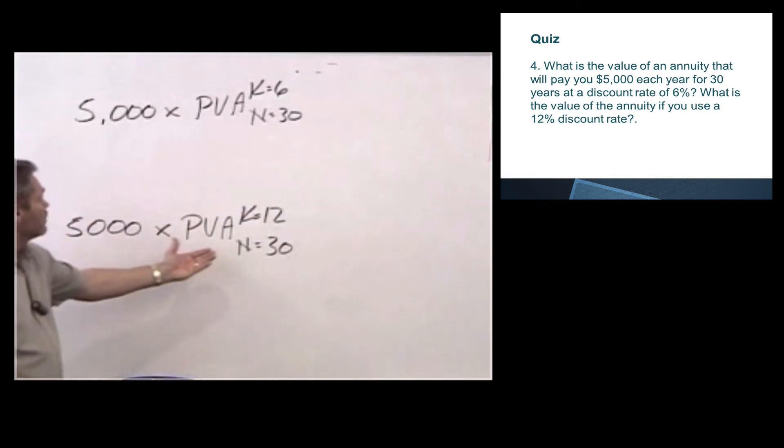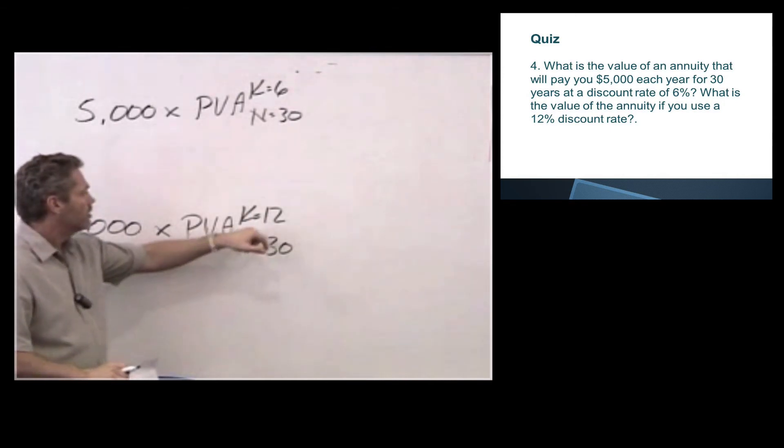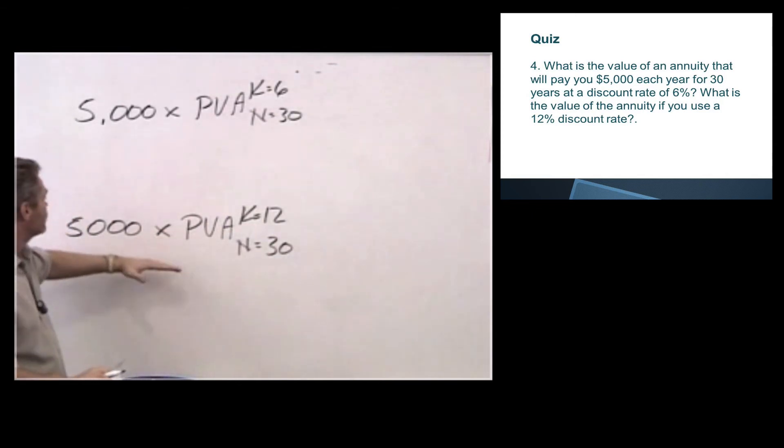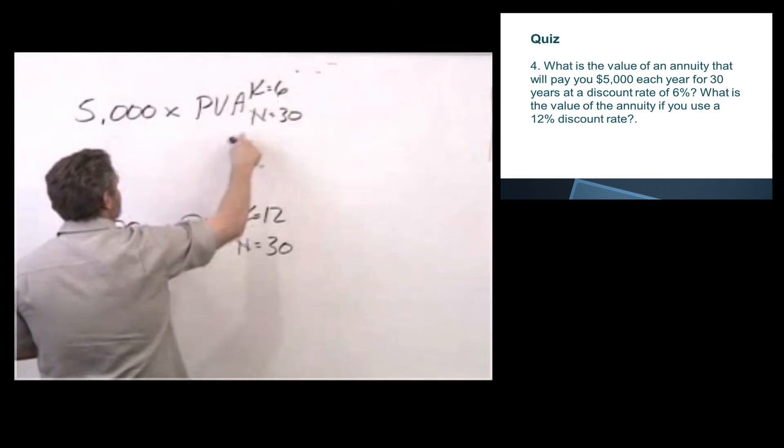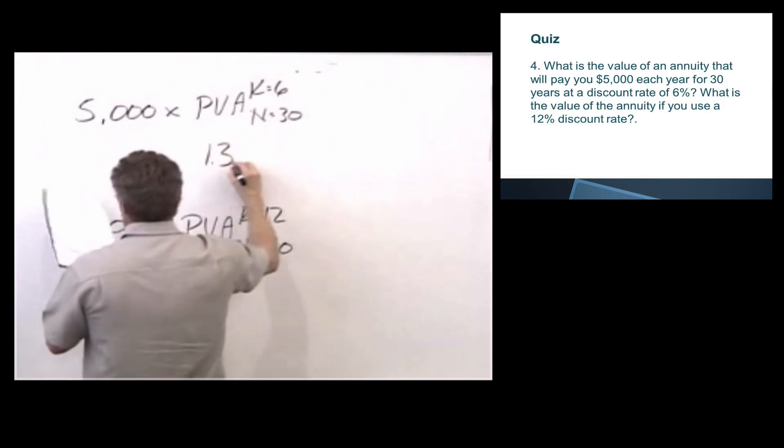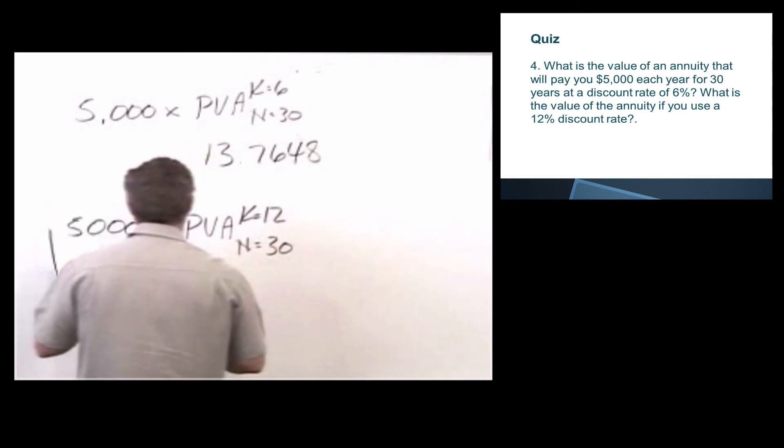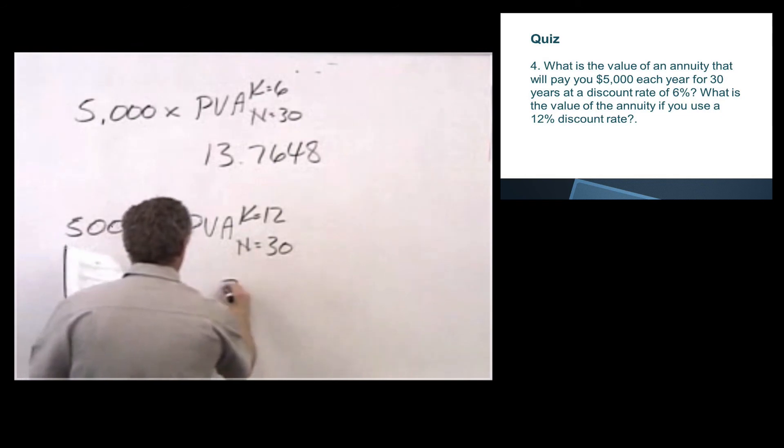We talked about before, we're coming back present value, and so we're discounting. So one thing I know for sure, the higher the discount rate, the smaller the number. So before I even do my factors, this one needs to be lower. If this answer isn't lower, we made some mistake. So I look up my factor, present value of an annuity, K equals 6, N equals 30, gives me 13.7648. And present value of an annuity, K equals 12, N equals 30, gives us 8.0552.